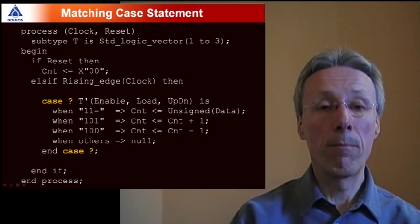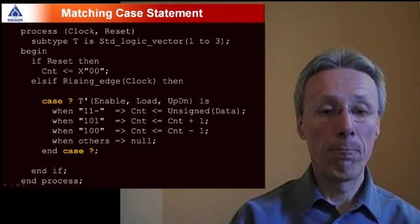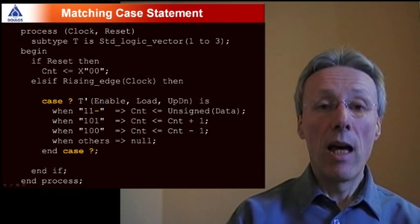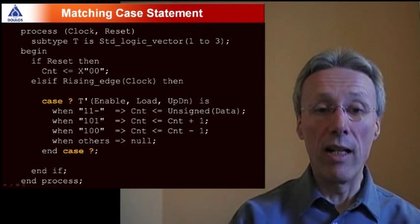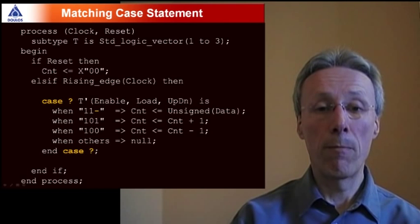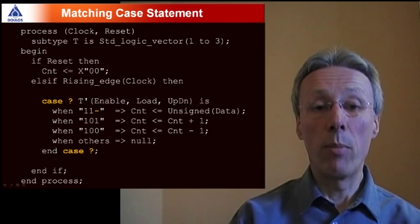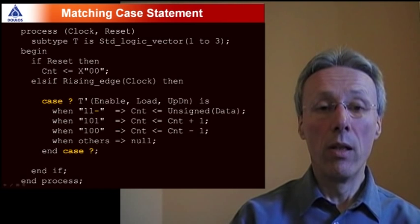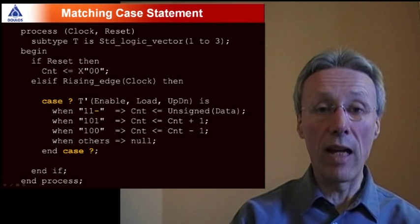So here's the nested ifs rewritten using a matching case statement. Syntax of matching case is the keyword case followed by a question mark. And in the matching case statement you can use the don't care value of type standard logic written as a dash as a pattern matching construct. So here we're building the expression at the top of the case statement by building an aggregate from these three scalar signals enable load and up down. We've had to use a qualified expression in order to make the type of those three signals unambiguous. We've created a three-bit standard logic vector type for that purpose.